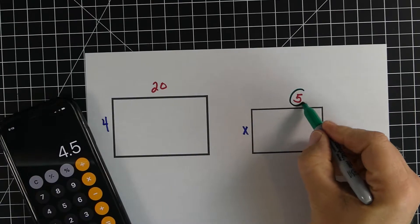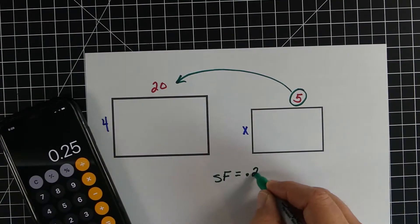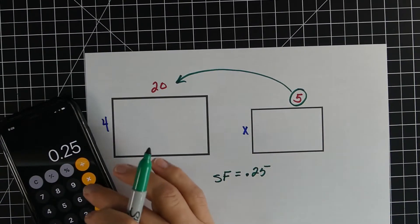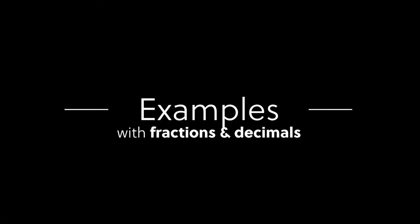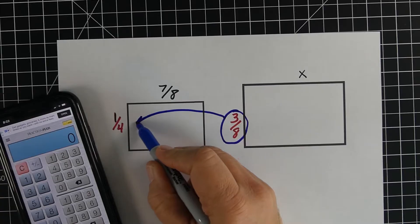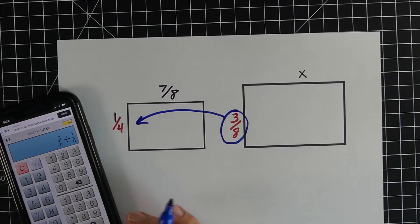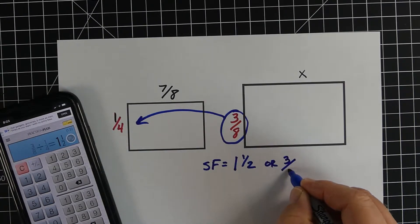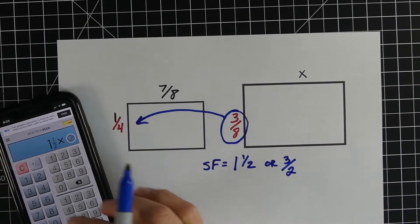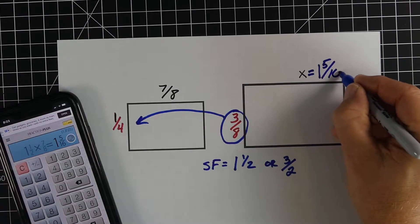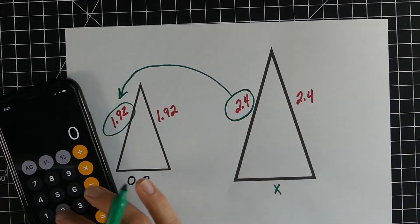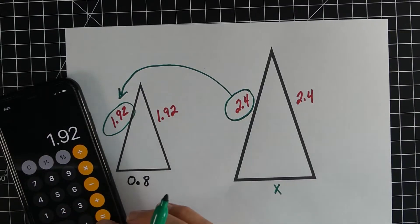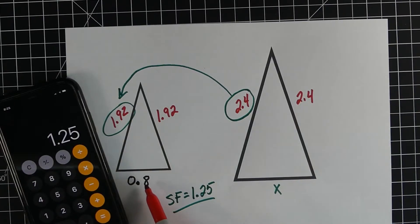Example three: it's shrinking, so we take 5 divided by 20 to get a scale factor of 0.25. Take 4 times 0.25 and we get 1. Just like with whole numbers, you can do the same thing with fractions or decimals. For fractions: take 3/8ths divided by 1/4th, which gives us 1 and 1/2 (or 3/2). That's our scale factor. Multiply by 7/8ths and you get the missing side: 1 and 5/16ths. For decimals: scaled divided by original gives 1.25; multiply 1.25 by 0.8 and that equals 1.